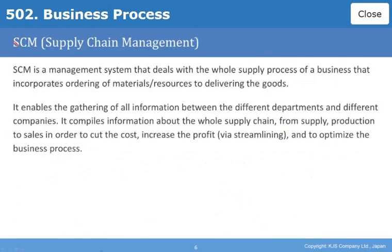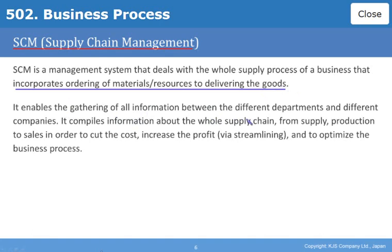The final acronym we have is SCM, Supply Chain Management. Supply Chain Management is a management system that deals with the whole supply process of a business that incorporates ordering of materials and resources to delivering the goods. It enables the gathering of all information between the different departments and different companies. It compiles information about the whole supply chain from supply, production to sales in order to cut the cost, increase the profit and to optimise the business process.